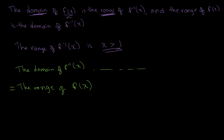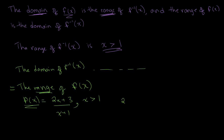Now to find the domain of f inverse of x, we need the range of f(x). So let's rewrite: f(x) = (2x + 3) / (x + 1), where x > 1. To find the range, we plug in x = 1 to get the lowest possible output value: (2×1 + 3) / (1 + 1) = 5 / 4. This gives us the minimum output since x can only be greater than 1 with positive coefficients, so all values of f(x) will be greater than 5/4.